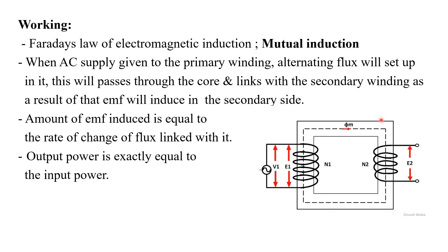We know that the function of the core is to carry or provide the necessary path for the flux. So this core will carry the entire flux produced in the primary winding and this will completely flow through the secondary winding. You can see the secondary winding is connected to the limb of this core. So the induced flux in the primary winding will completely flow through the secondary winding, so that an EMF E2 will be induced in the secondary side. This is mutual induction.